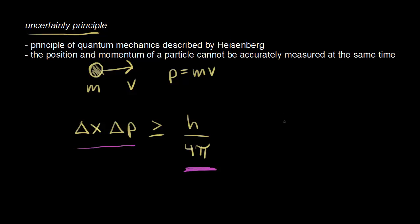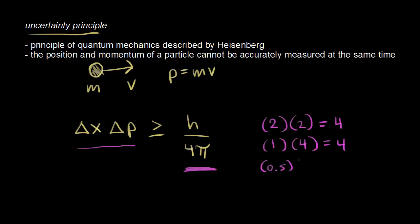To understand the idea of inversely proportional: if you have an uncertainty of two for the position and two for the momentum, two times two equals four. If I decrease the uncertainty in position to one, the uncertainty in momentum must increase to four, because one times four equals four. If I decrease the position uncertainty further to 0.5, the momentum uncertainty goes up to eight, because 0.5 times eight gives us four.